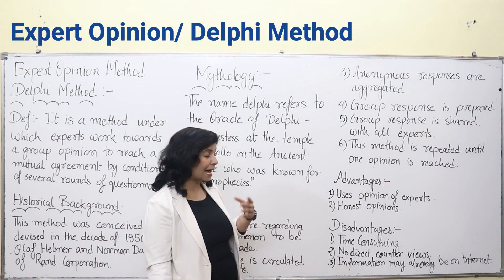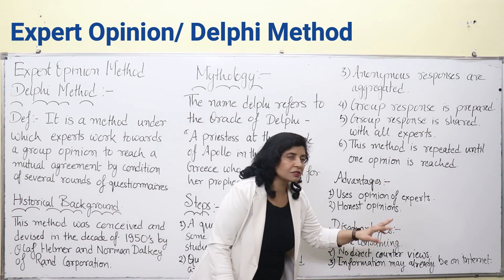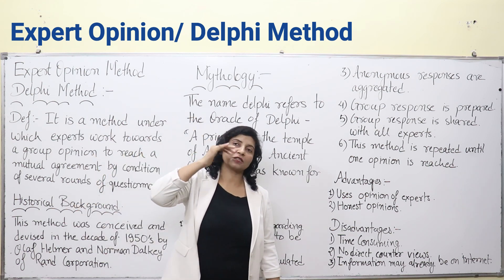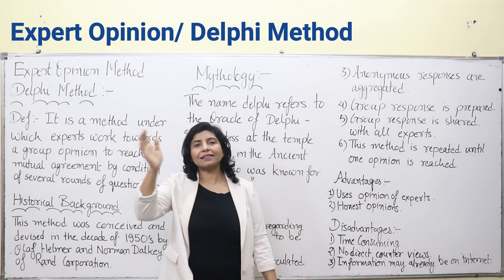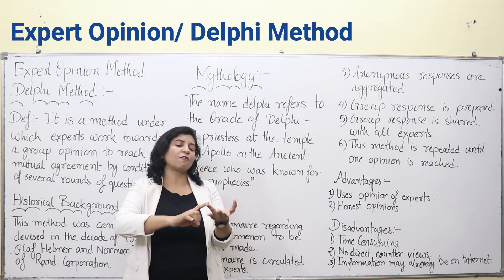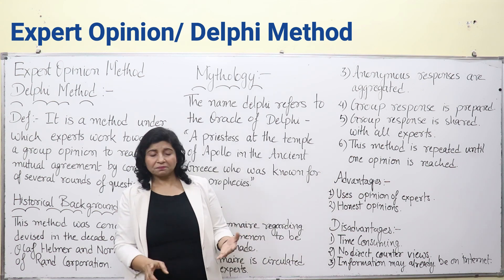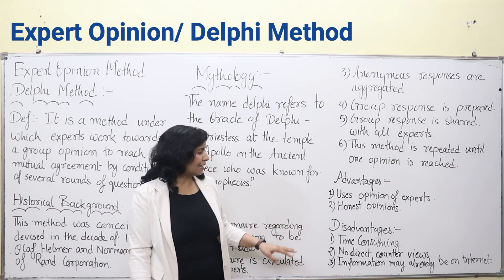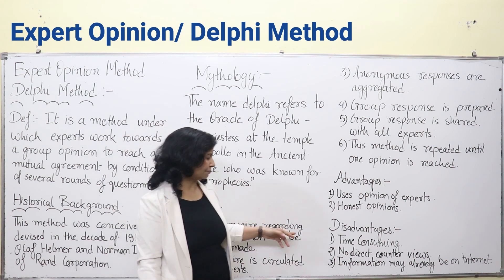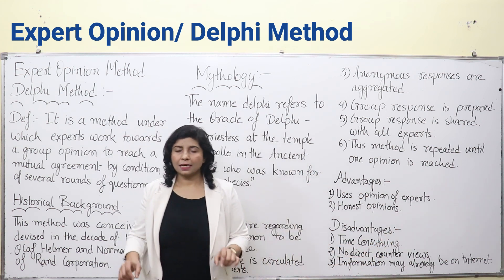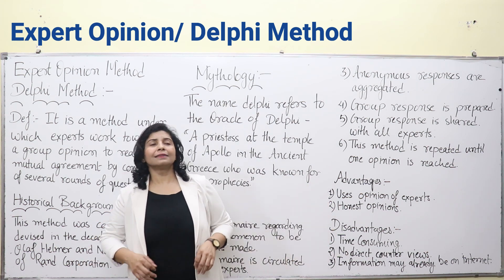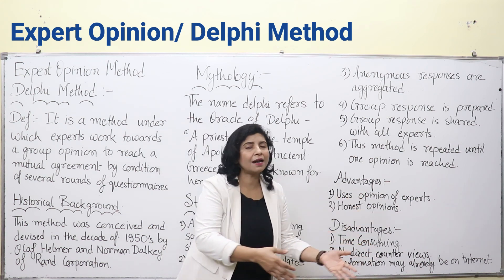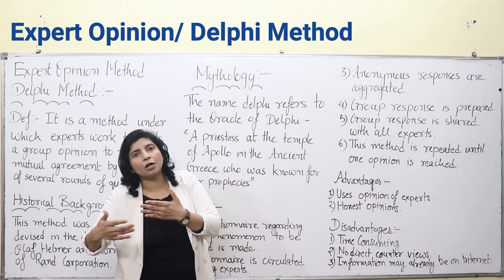Every method has its disadvantages. Number one: it is very time-consuming. Sending questionnaires to 10–20 people, receiving anonymous responses, preparing group responses, and repeating this again and again is a very tiresome and cumbersome process involving a lot of time, effort, and money. People may not feel free to repeatedly offer their opinions, making it futile after some time. Number two: there are no direct counter-views. In brainstorming or group discussions, people can offer instant counter-views, but in this method, instant counter-views cannot be offered — which is a significant lag.